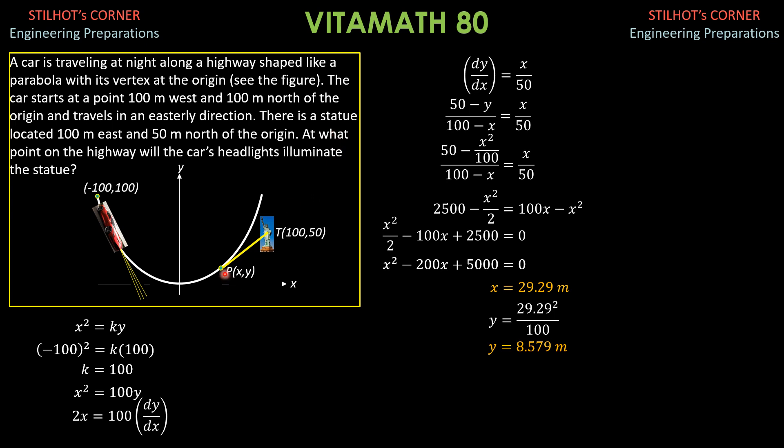So, to answer the question, point P is at 29.29, 8.579. Or P should be 29.29 meters east of the origin and 8.579 meters north of the origin. So, that's it for this video. I hope that you were able to follow the solutions and understand the explanations.